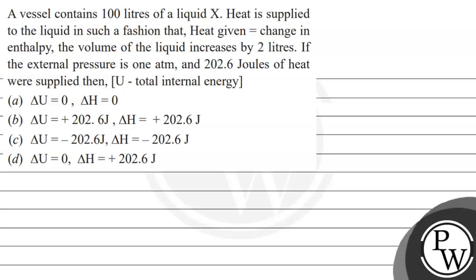Hello Bacho, let's read this question. The vessel contains 100 liters of liquid X. Heat is supplied to the liquid in such a fashion that heat given equals change in enthalpy. The volume of the liquid increases by 2 liters. If the external pressure is 1 atm and 202.6 joules of heat were supplied, then the total internal energy is given to us.